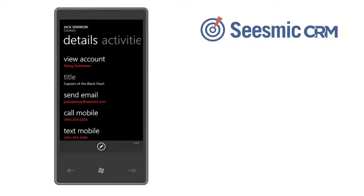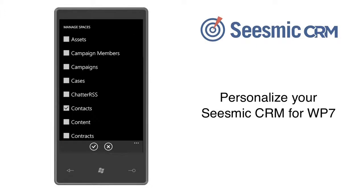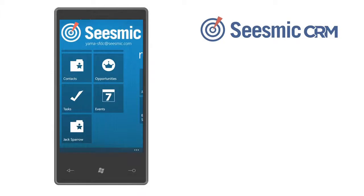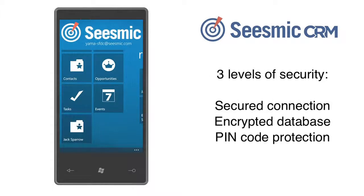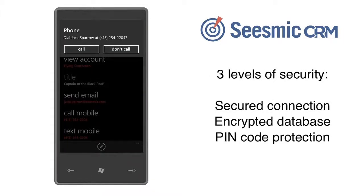Seasmic CRM for Windows Phone 7 supports custom objects, and you can personalize your home screen to include the tiles that you would like, and have total confidence in Seasmic CRM with three levels of security.